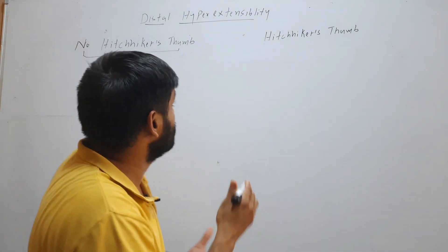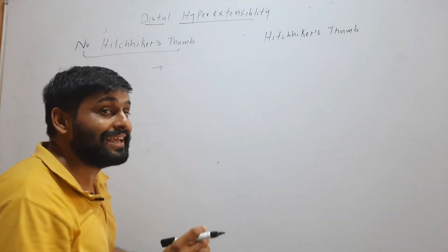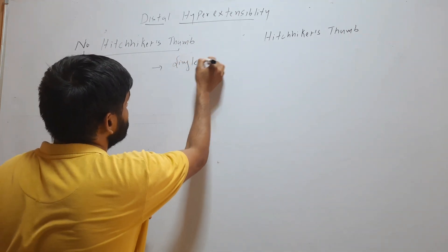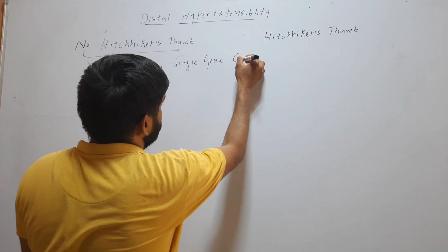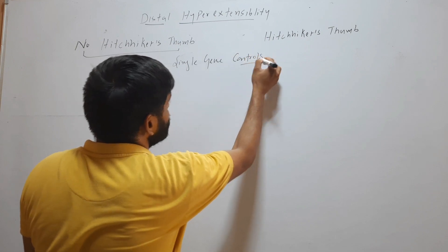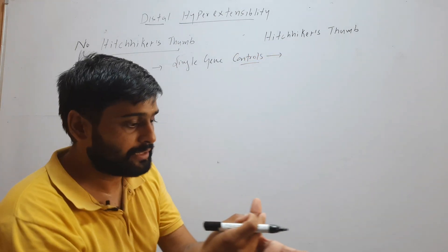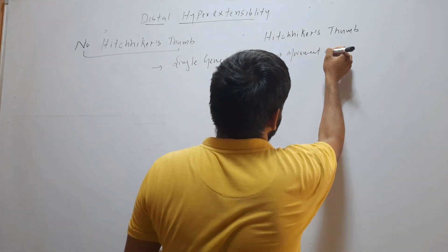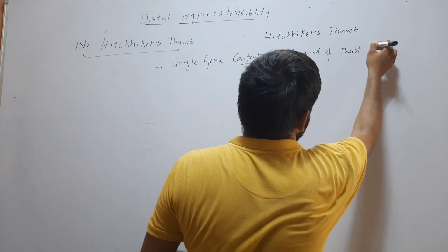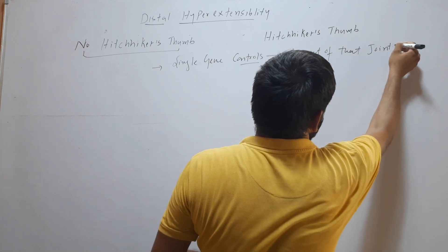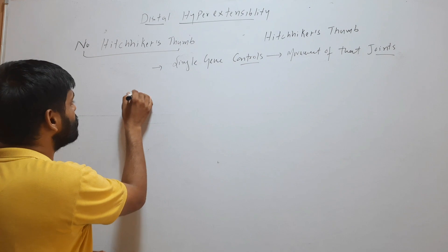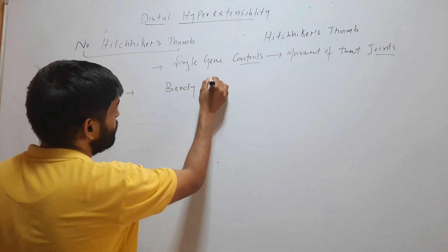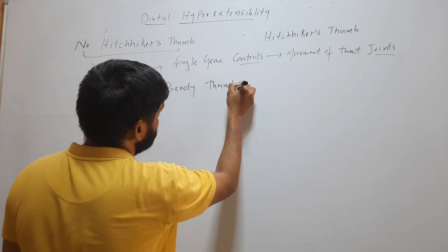So why is it so? There is genetics behind that. A single gene controls the movement of that thumb's distal joint, and that gene is called the bendy thumb gene.